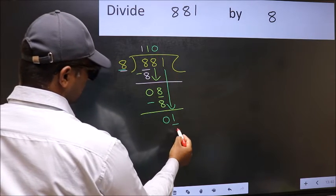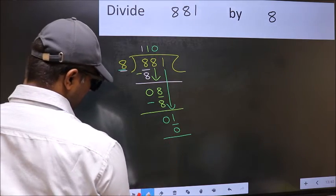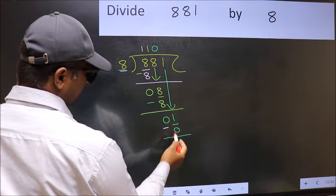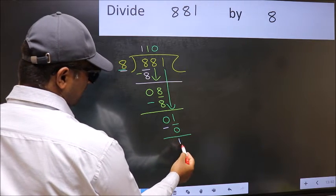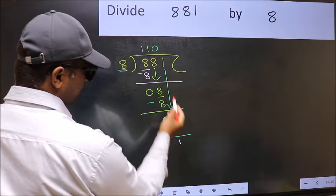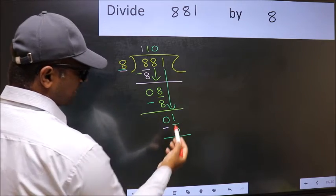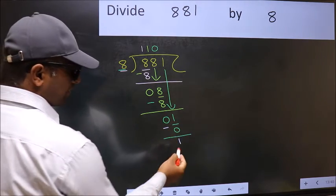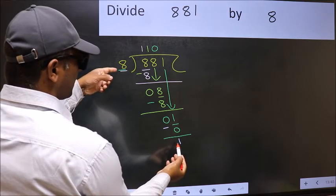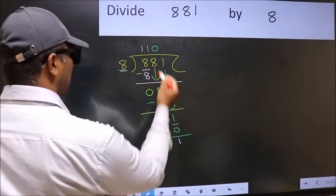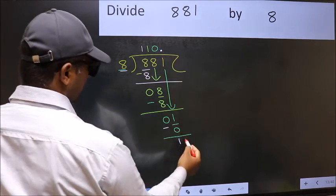So 8 into 0, 0. Now you should subtract. 1 minus 0, 1. Over here, we did not bring any number down. And 1 is smaller than 8. So now you can put dot and take 0.